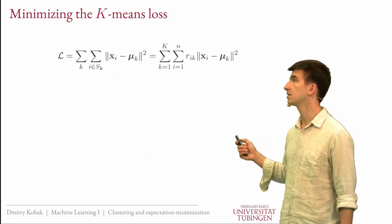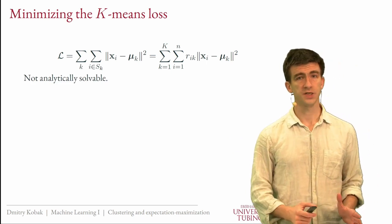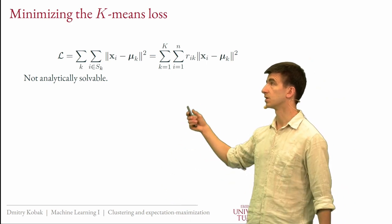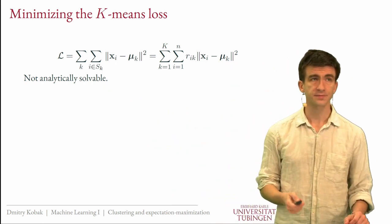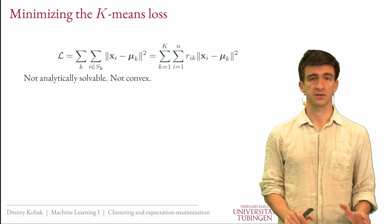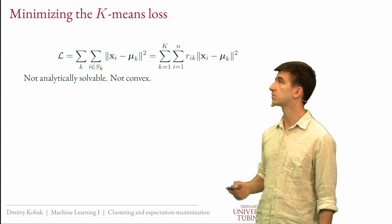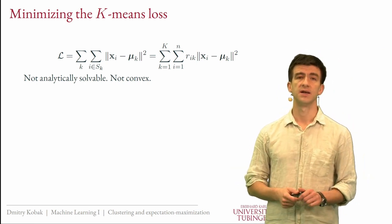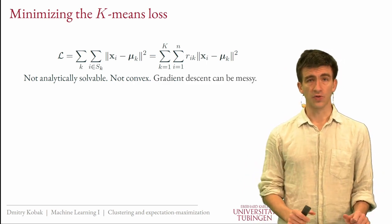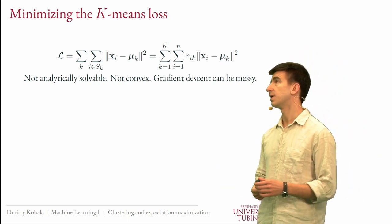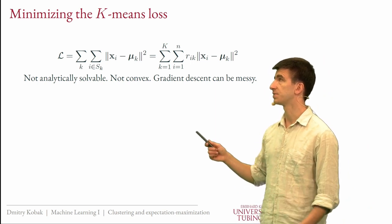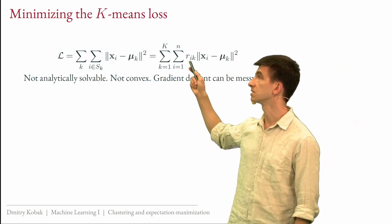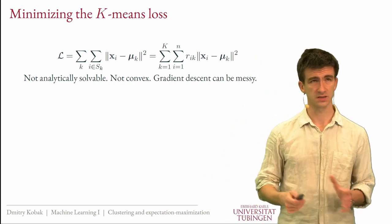How do we minimize this loss? The first piece of bad news is that it is not analytically solvable — there is no formula for what the mus and the assignment variables are for an arbitrary dataset. The second piece of bad news is that it is not convex. It's non-convex and badly non-convex, with a lot of local minima. The third piece of bad news is that gradient descent can be used, but it is a little messy to write down the derivatives, especially when dealing with the r variables — it's not even clear how to take a derivative of those.